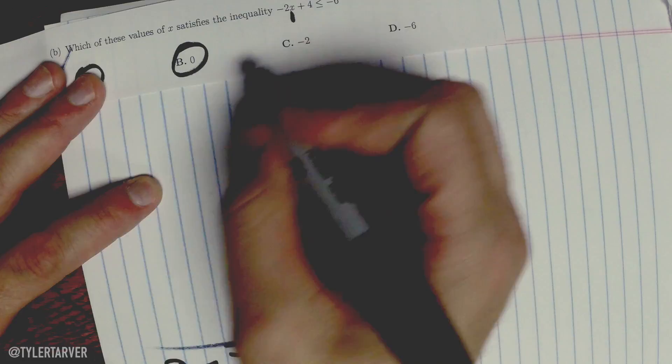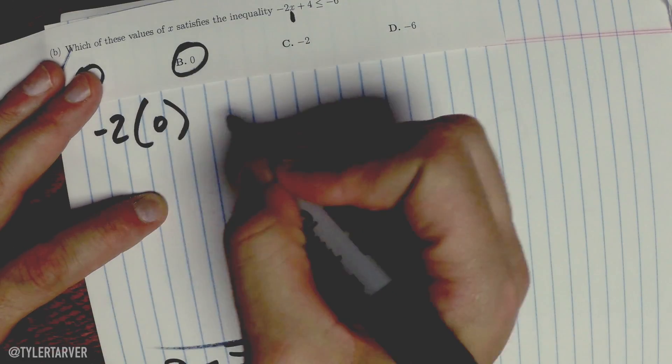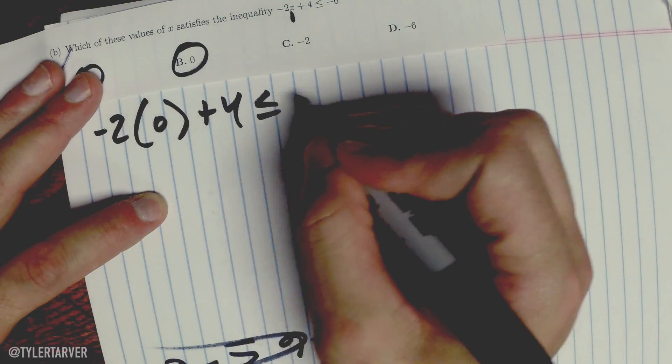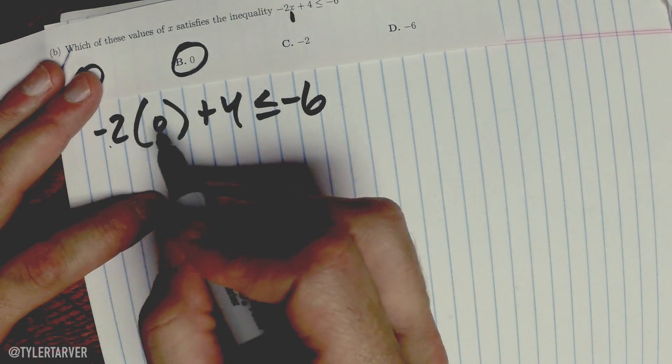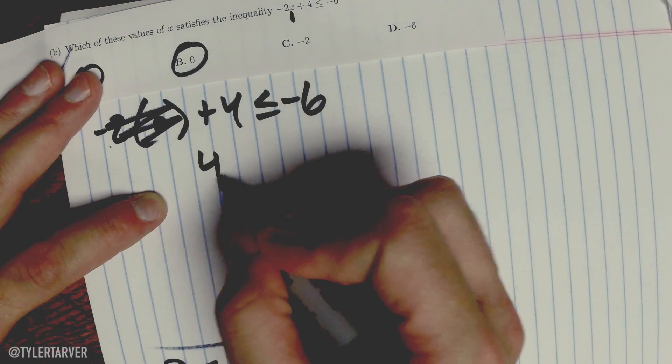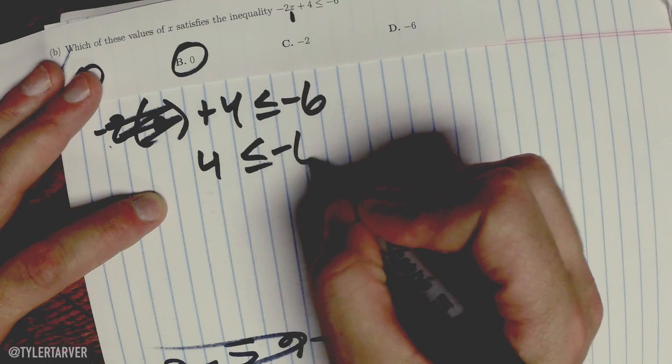So I'm going to plug in the next one which is zero. So I got -2, plugging in zero plus 4 is less than or equal to -6. -2 times zero is zero, so that goes away.